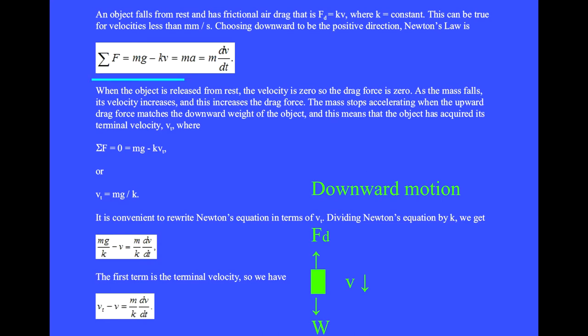Newton's law is the sum of the forces equals the downward positive weight mg minus the upward negative frictional drag force kv equals mass times acceleration. And since acceleration is the time derivative of velocity, we get m dv dt.